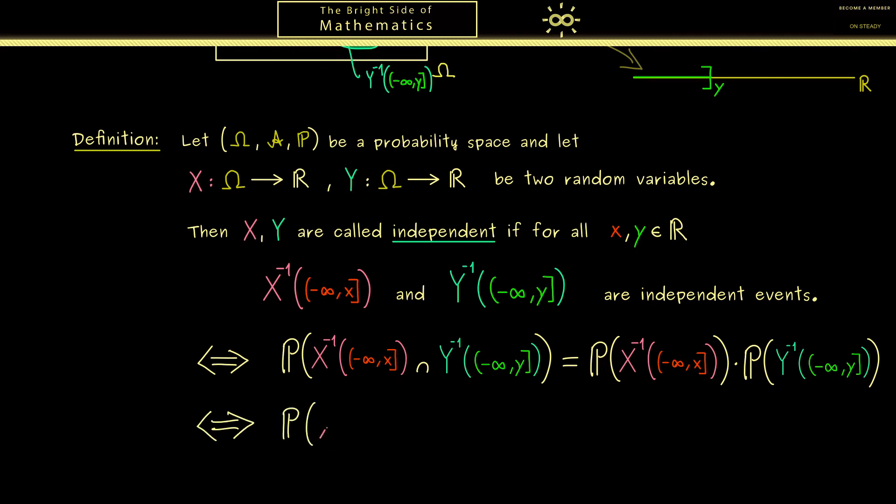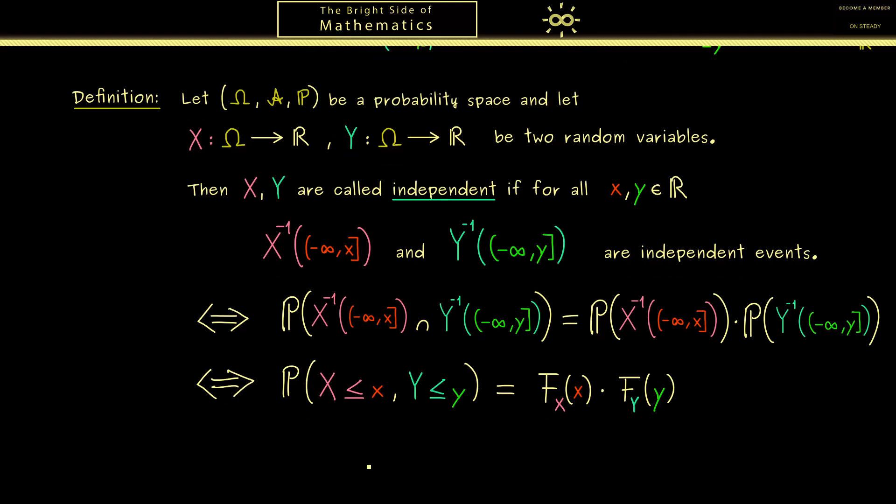And now since we have pre-images here we can simplify this notation even more. On the left hand side we can write this is X is less or equal than lower case x and Y is less or equal than lower case y. Then of course we could do the same thing on the right hand side. Hence there you should recognize that we have the CDFs we introduced in the last video. What I mean is that we have the cumulative distribution function of X and of Y. So the product F_X times F_Y.